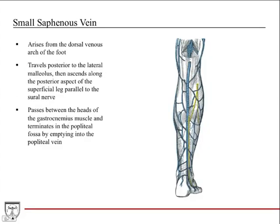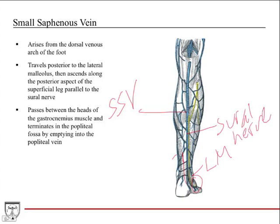The small saphenous vein also arises from the dorsal venous arch of the foot. It travels posterior to the lateral malleolus and ascends along the posterior aspect of the superficial leg, parallel to the sural nerve — an important spatial relationship. It's a superficial vein traveling with a cutaneous nerve. It passes between the heads of the gastrocnemius muscle and terminates into the popliteal vein.